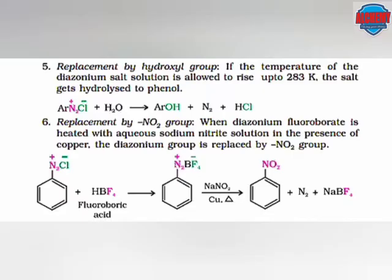The diazonium salt reacts with water to form aryl hydroxide, that is phenol, along with nitrogen and hydrochloric acid. The next is replacement by NO2 group. When diazonium fluoroborate is heated with an aqueous solution of sodium nitrite in the presence of copper, the diazonium group is replaced by the NO2 group.